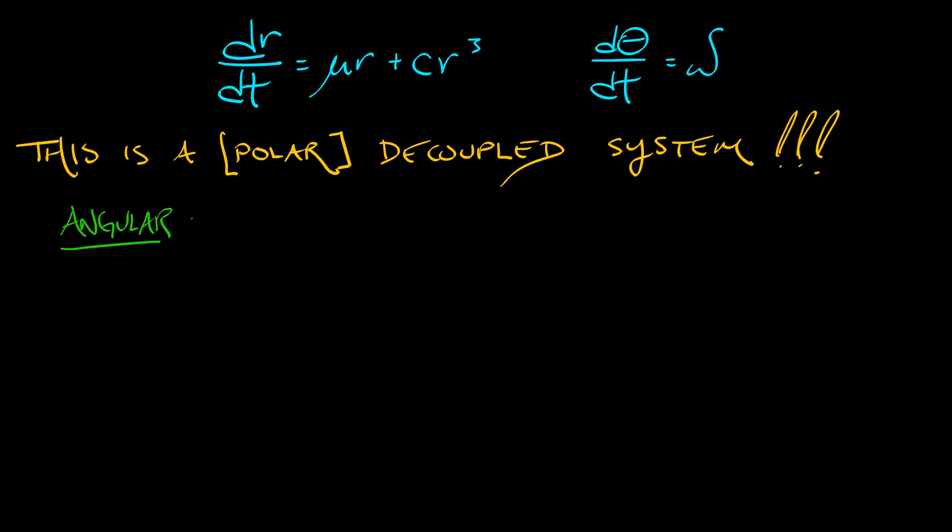So in the angular coordinate, what do we have? We have d theta dt equals a constant. It's spinning, either counterclockwise or clockwise, depending on the sign of omega.